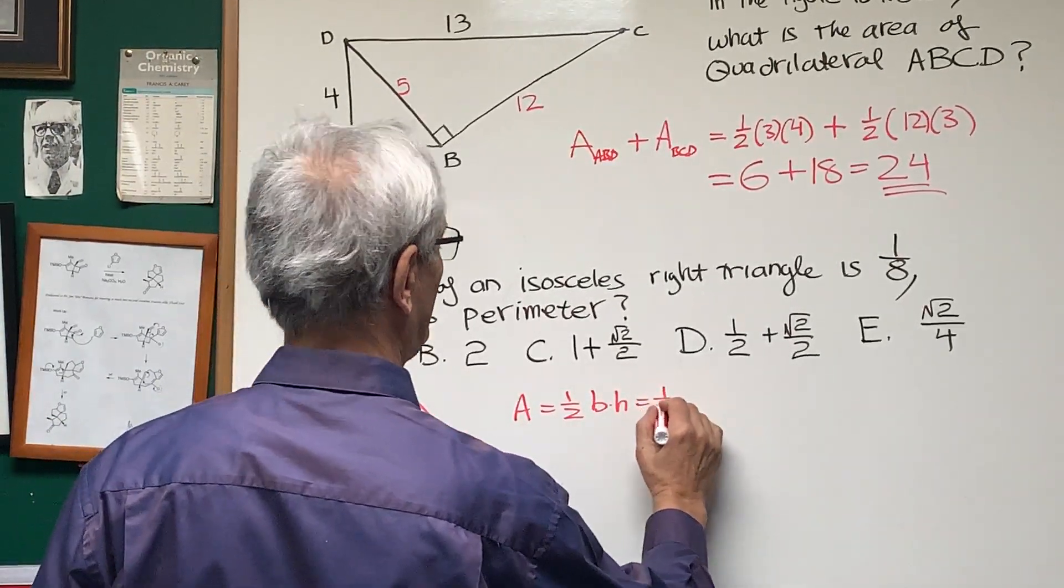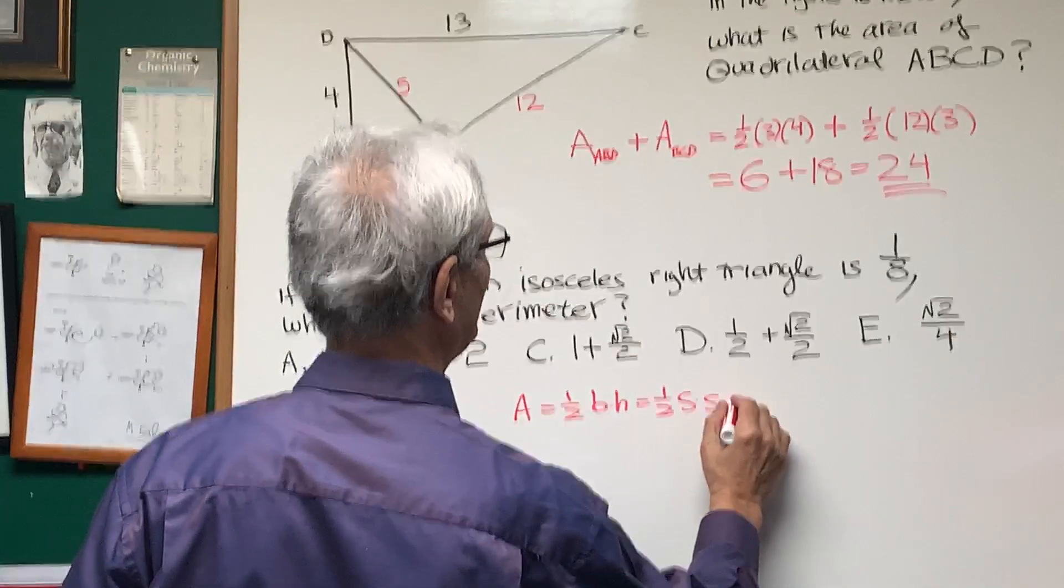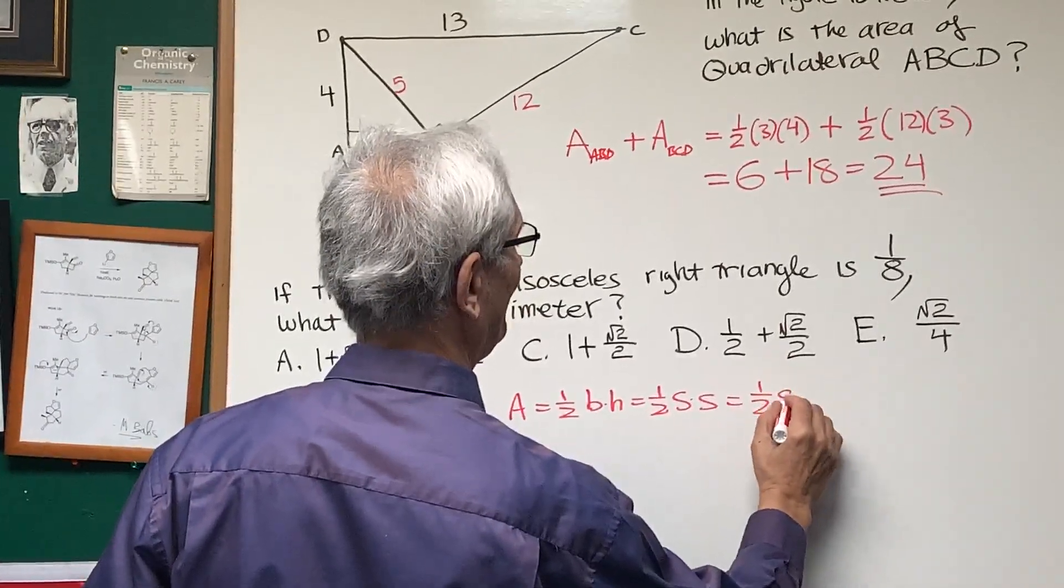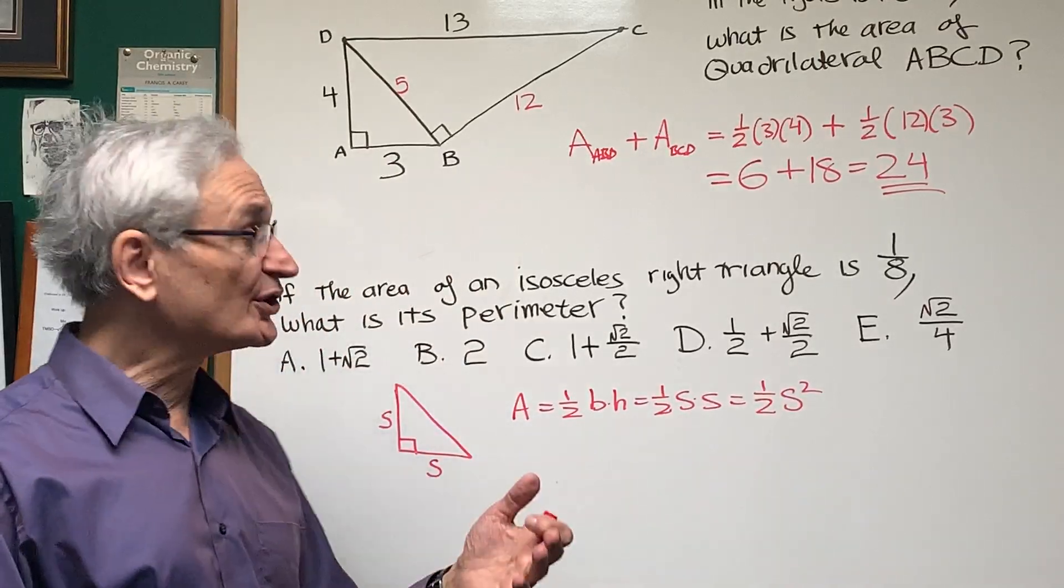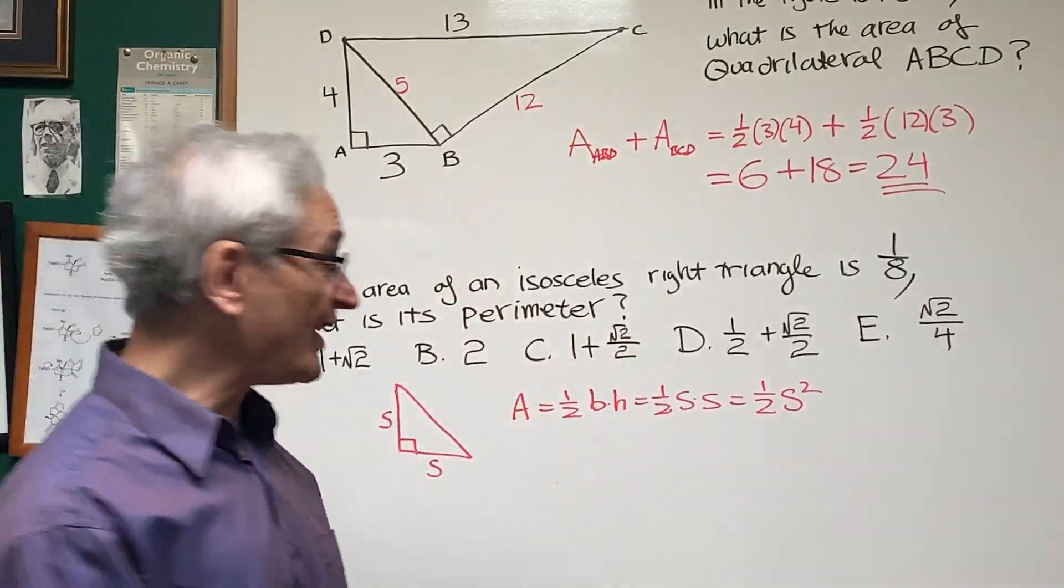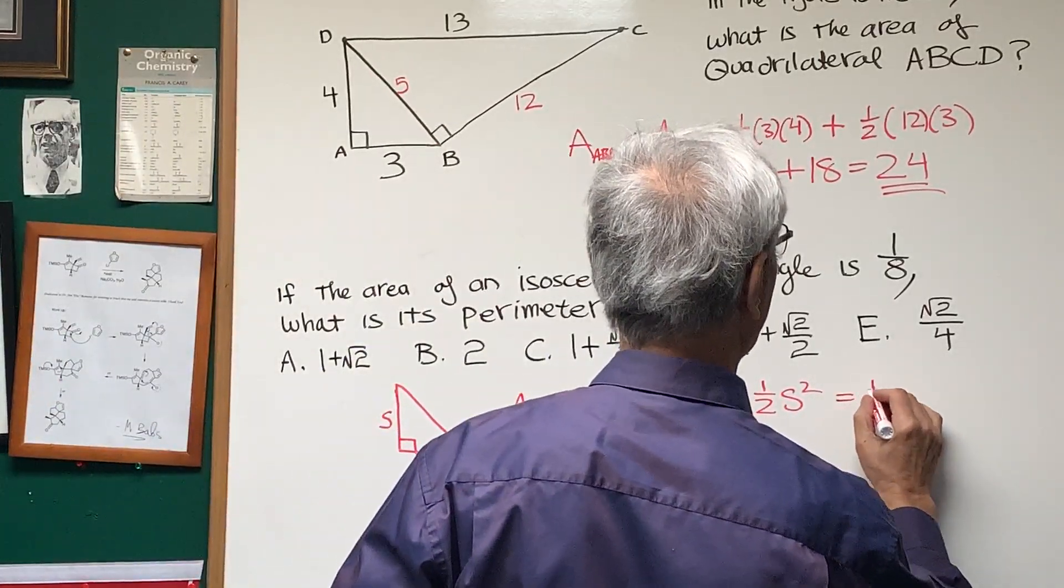The area of this triangle is one-half the base times the height. Base times the height, which is going to be one-half s times s, which is one-half s squared.